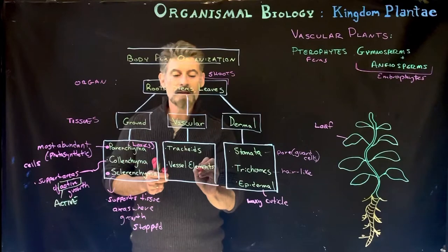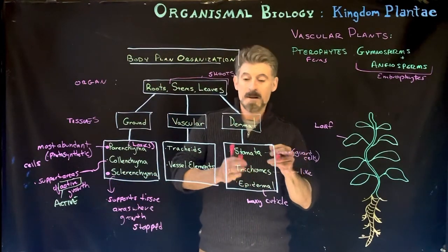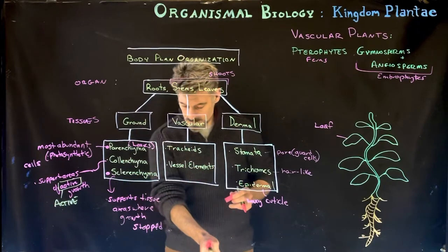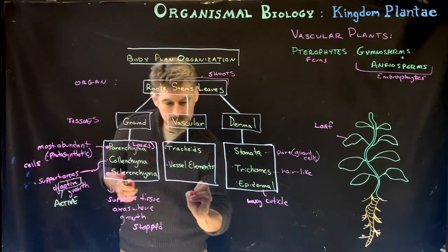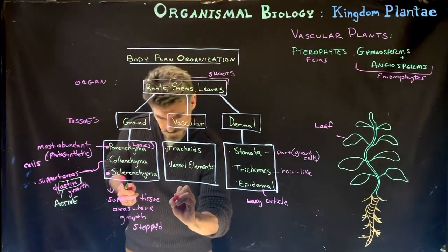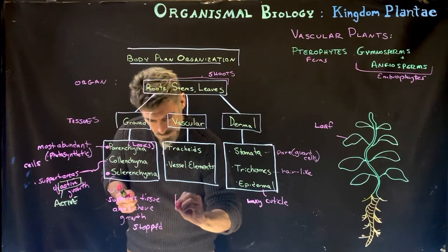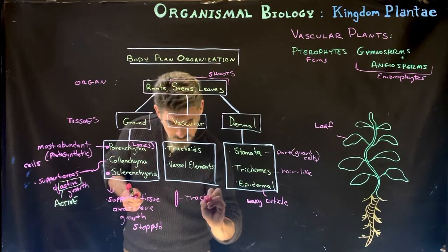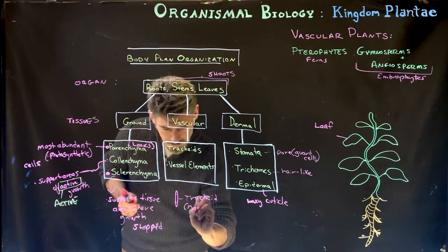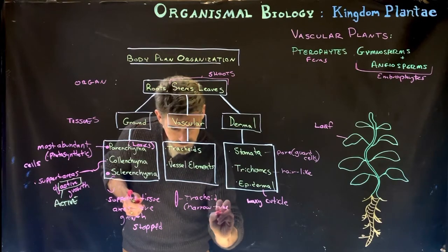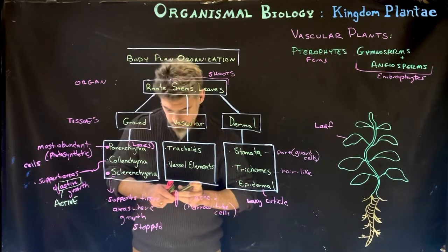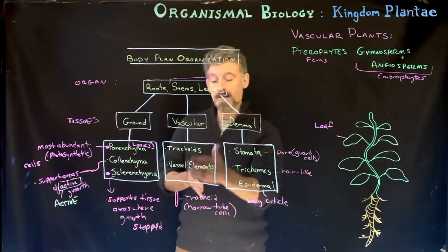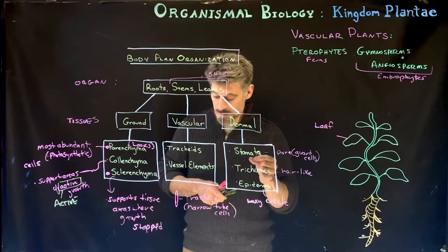Vascular tissues are broken down into different types with different cell types making them up. We have tracheids and vessel elements — both are tube-like cells. Tracheids are narrow tube-like cells. When they mature, the cells die and hollow out, becoming hollow cells.